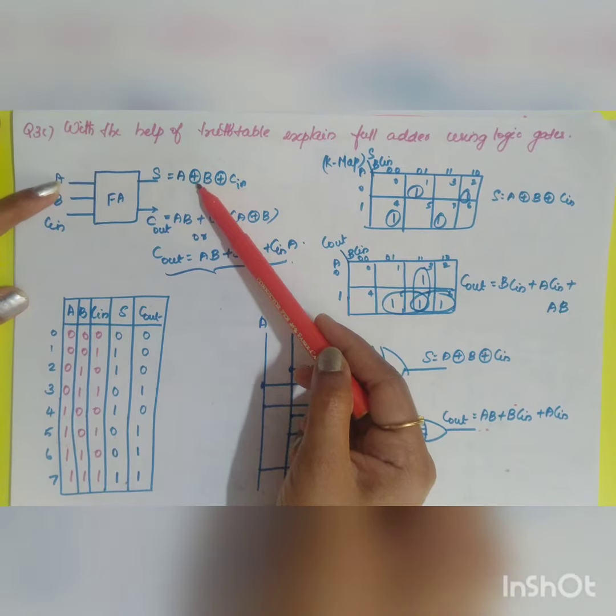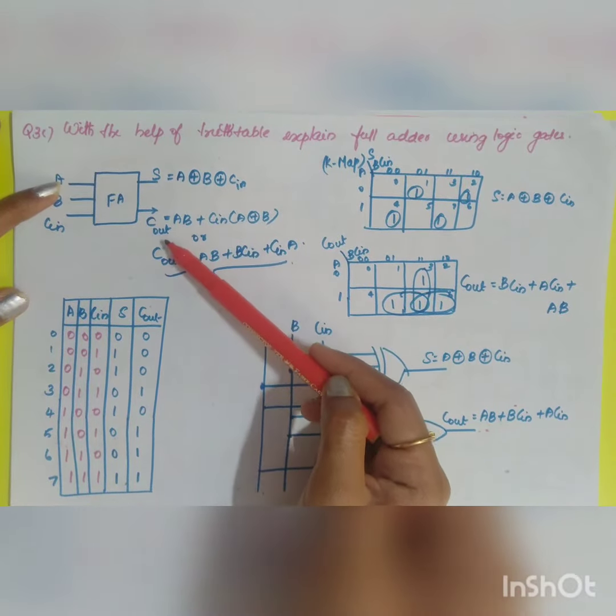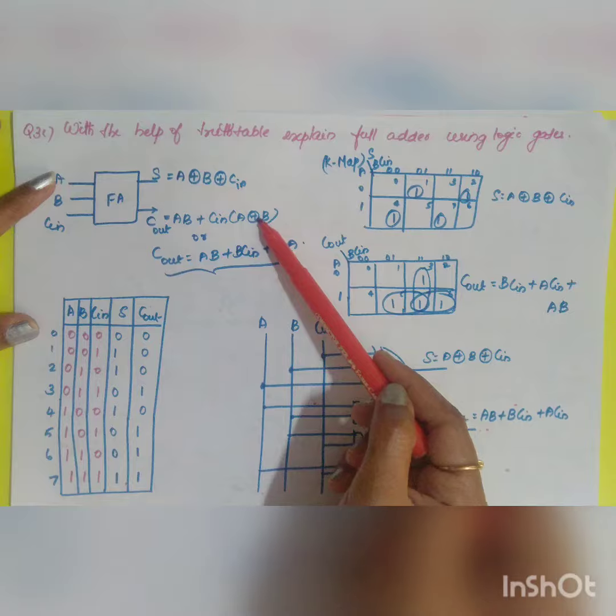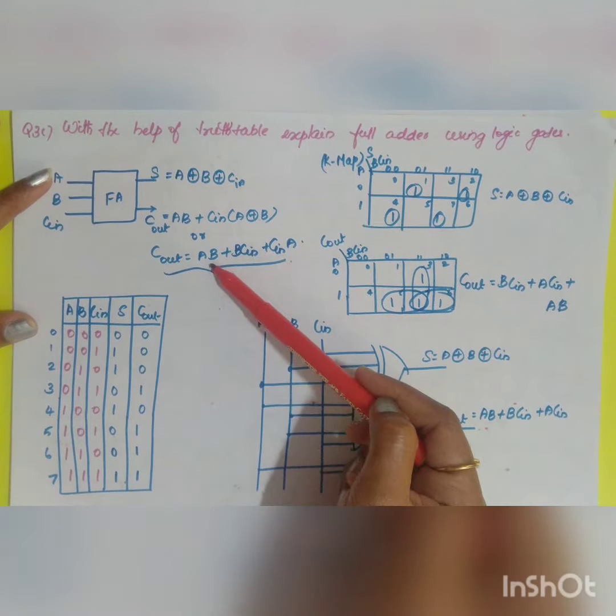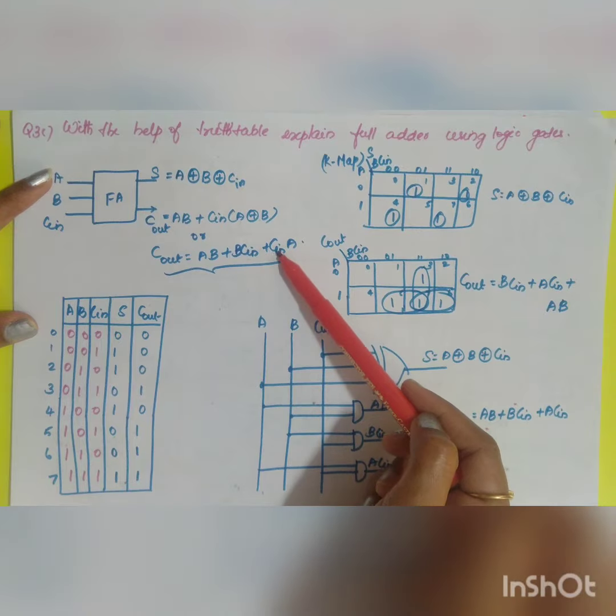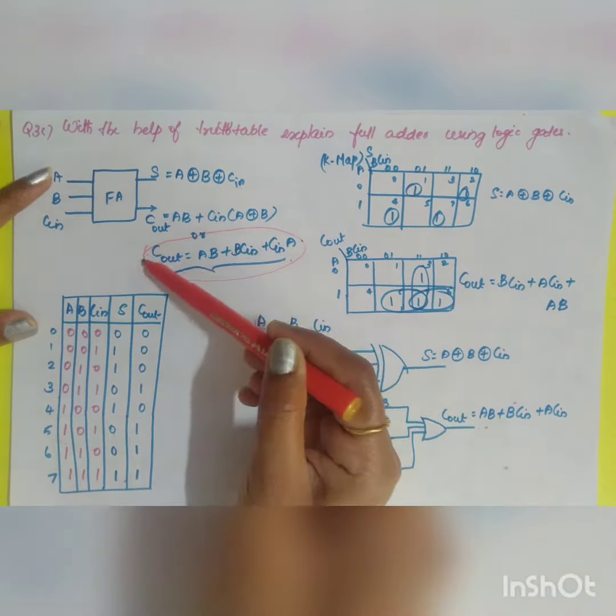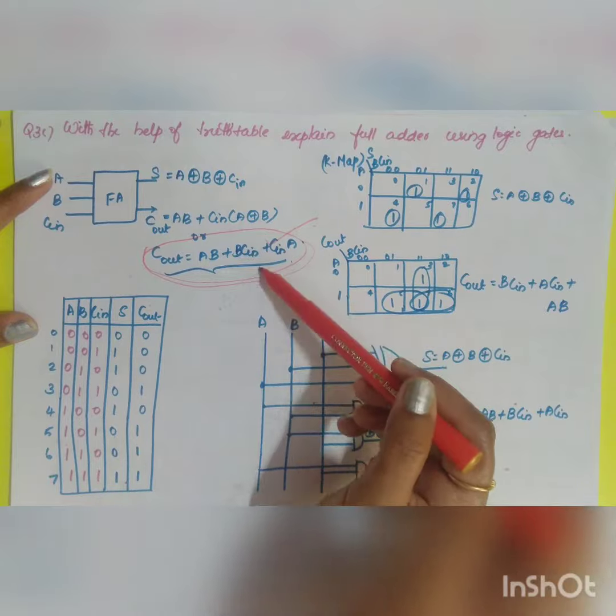Sum is equal to A XOR B XOR Cin. Cout is equal to - you have two expressions: AB plus Cin into A XOR B, or Cout is equal to AB plus BCin plus ACin. For using the logic gate, you can go forward with your carry out, the second expression.